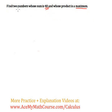So two numbers, let's call them x and y. Their sum is 40, so I can say x plus y is equal to 40.